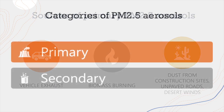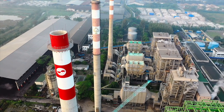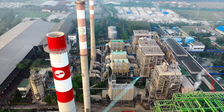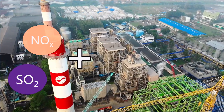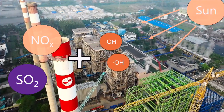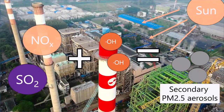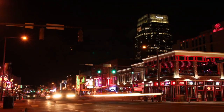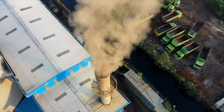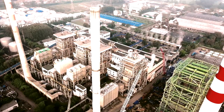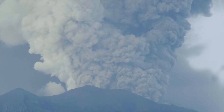Secondary aerosols, on the other hand, are formed as a result of chemical processes that can sometimes be really complex. Basically, volatile chemicals such as sulfur dioxide and nitrogen oxides interact with things like hydroxyl radicals and sunlight, which leads to the creation of tiny particles. These sulfur and nitrogen oxides are pollutants emitted from automobiles, power plants, and industries. So PM 2.5 can come from a lot of different sources, even natural ones like volcanoes.